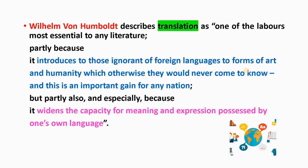Wilhelm von Humboldt describes translation as one of the labors most essential to any literature, because it introduces those ignorant of foreign languages to forms of art and humanity which they would otherwise never come to know — and this is an important gain for any nation. Furthermore, translation widens the capacity for meaning and expression possessed by one's own language and increases its vocabulary by adding new words.